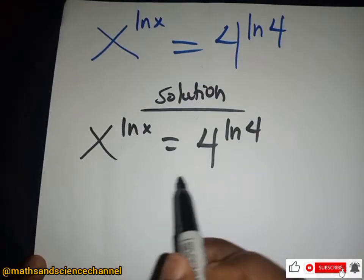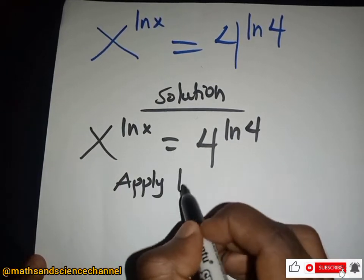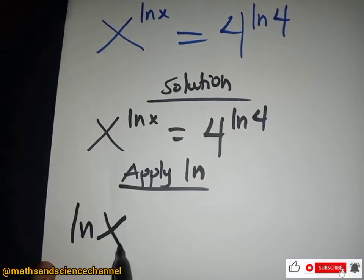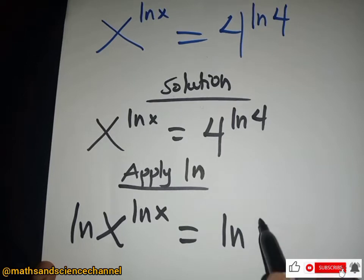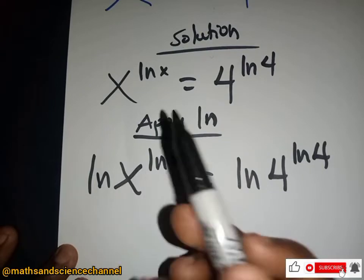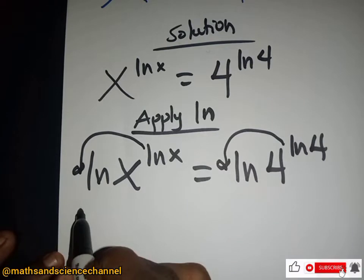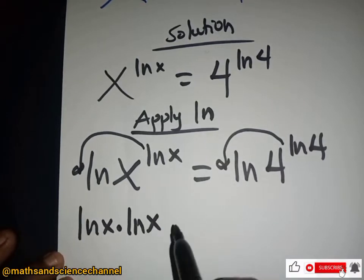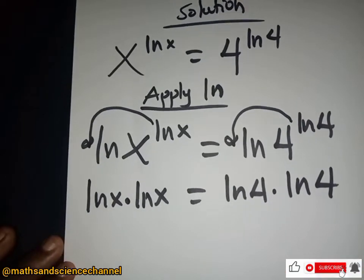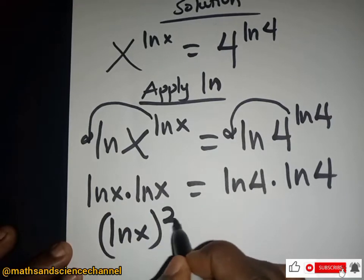To find x, we apply ln on both sides. So we have ln of x to the power ln x being equal to ln of 4 to the power ln 4. From properties of indices, the exponents drop down, giving us ln x times ln x on the left, and ln 4 times ln 4 on the right.